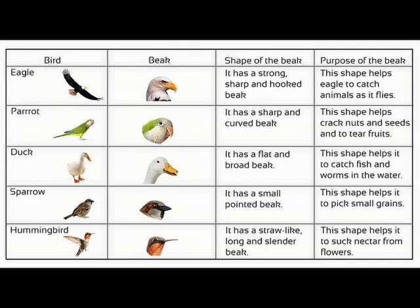Next, a picture of the parrot. Look at the beak of the parrot — it has a sharp and curved beak. This shape helps to crack nuts and seeds, and to tear fruits. The cover of the nut is very hard, so with the help of this type of beak, a parrot can easily crack the nut to eat the soft part inside.